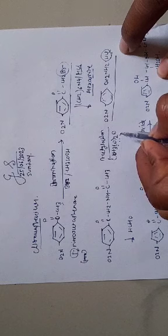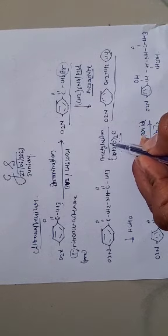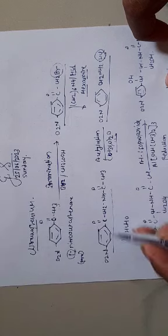Acetylation occurs in the presence of CH3CO2O, acetic anhydride, to form this structure.